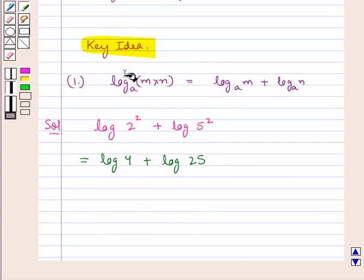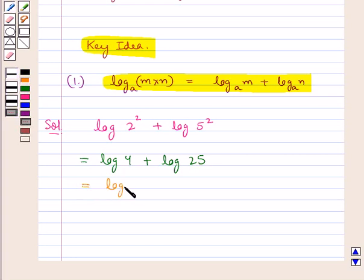Now, using this key idea, we get that log 4 plus log 25 would be equal to log of 4 multiplied by 25.